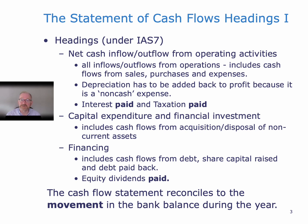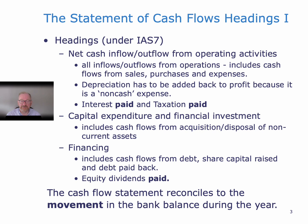In the operating activities section, what you will start with is the profit before tax. You will add back depreciation and then you will adjust for a number of working capital items — inventory, receivables, and payables. And then you will work out what interest was paid and tax was paid. And that will give you your net cash inflow from operating activities.